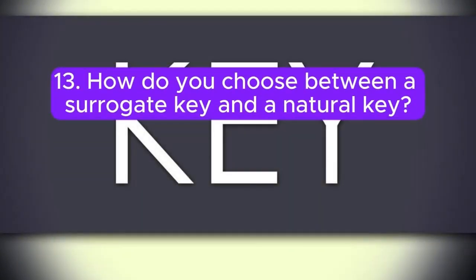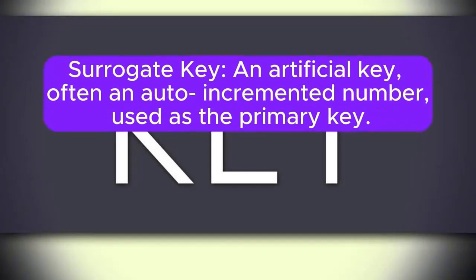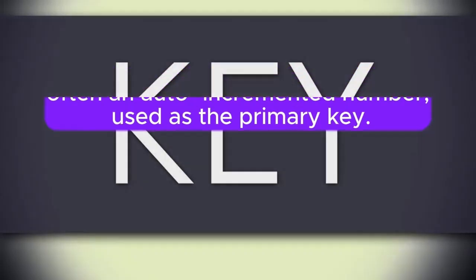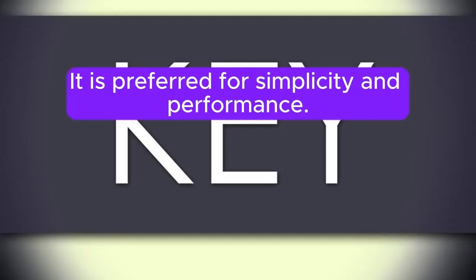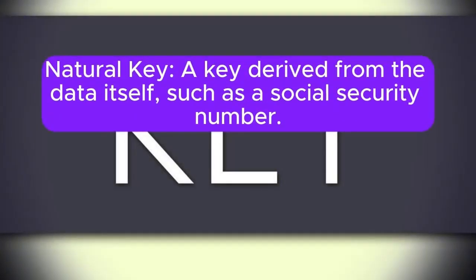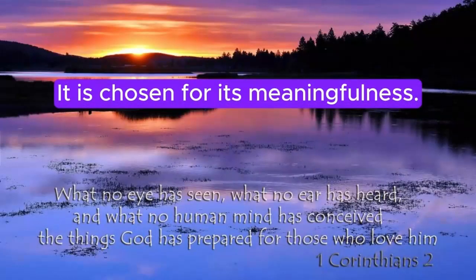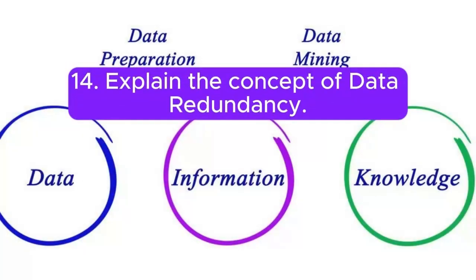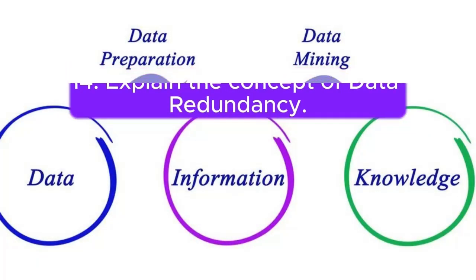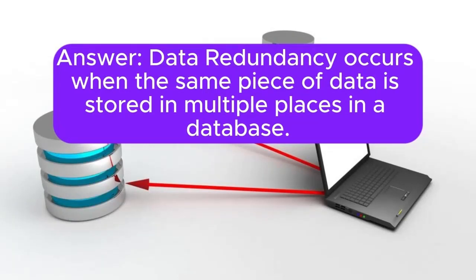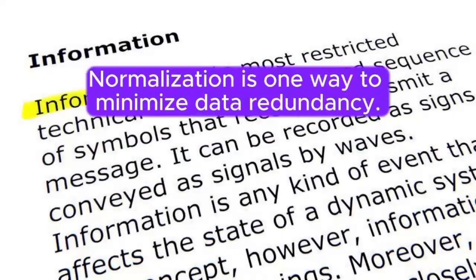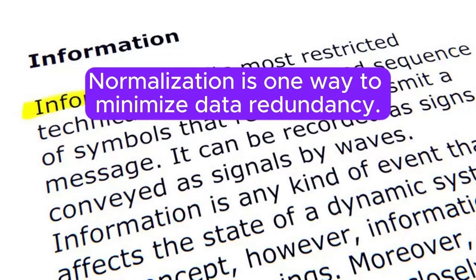13. How do you choose between a surrogate key and a natural key? Answer: A surrogate key is an artificial key, often an auto-incremented number, used as the primary key. It is preferred for simplicity and performance. A natural key is a key derived from the data itself, such as a social security number, and is chosen for its meaningfulness. 14. Explain the concept of data redundancy. Answer: Data redundancy occurs when the same piece of data is stored in multiple places in a database. Normalization is one way to minimize data redundancy.